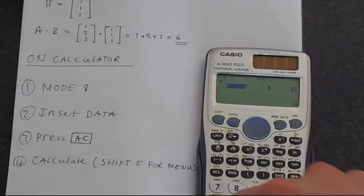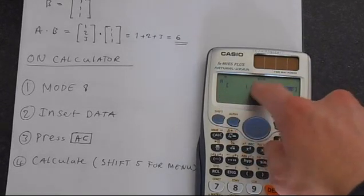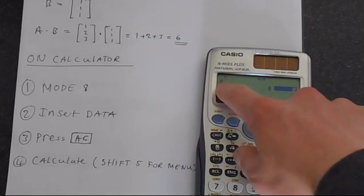So press 1, 1, then press equals, 2, then press equals, and 3, and press equals. Now we want to insert vector B.